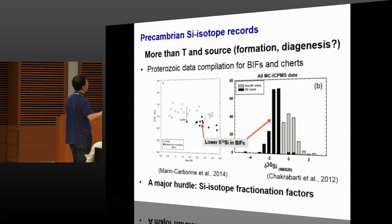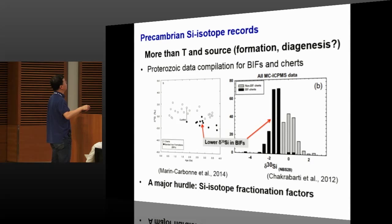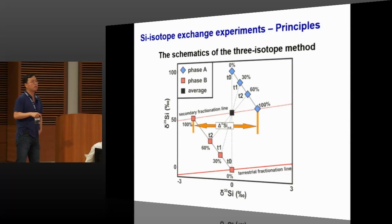It's still unclear why this is the case — maybe it's due to a different fractionation factor associated with formation of these different rock types, or due to different diagenesis. All this interpretation fundamentally depends on how well we know the fractionation in different systems. This study will try to determine the fractionation factor between the aqueous silica and the iron silica gel.